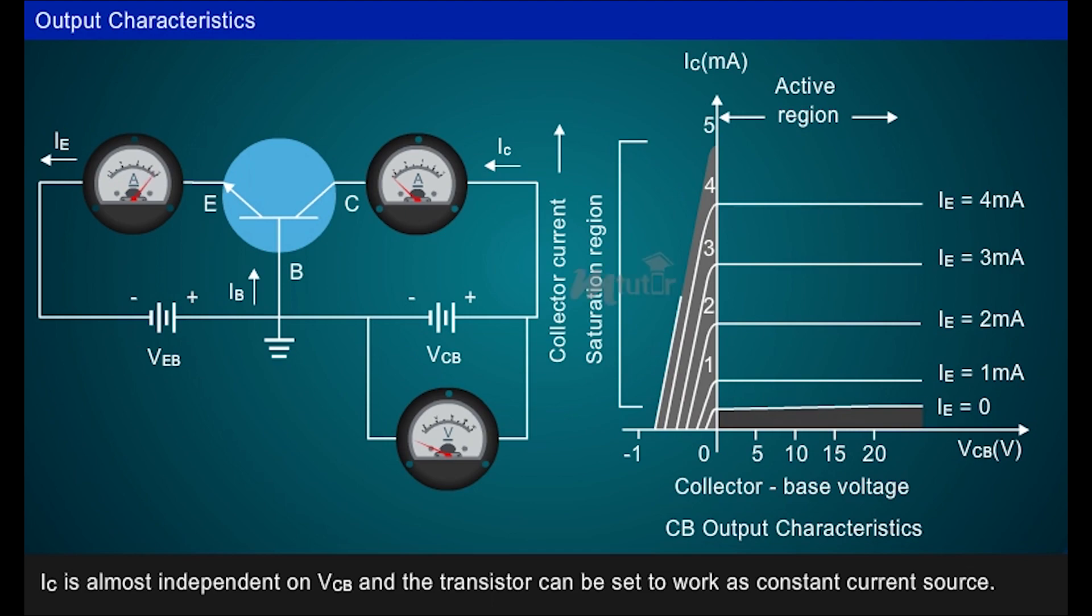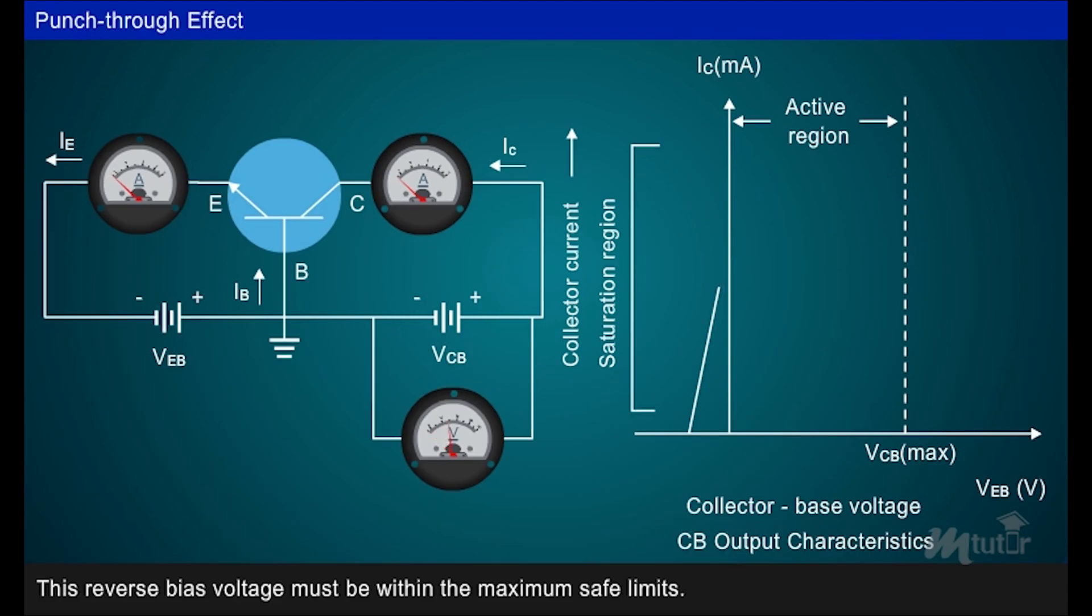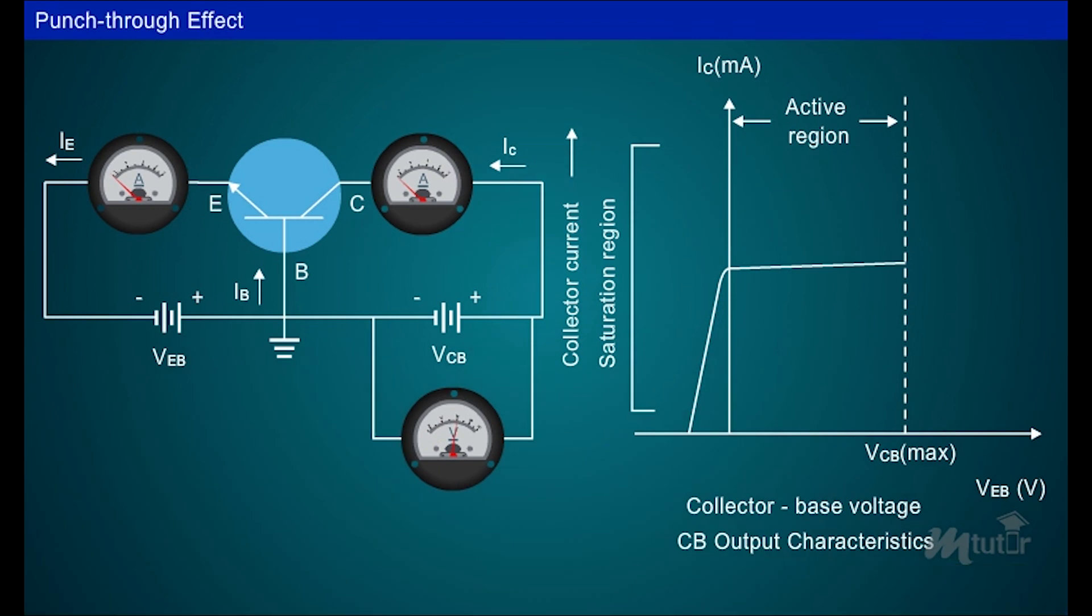For every transistor, there is limit on the maximum value for reverse bias voltage. The reverse bias voltage must be within the maximum safe limits. If this maximum limit is exceeded, transistor breakdown occurs.